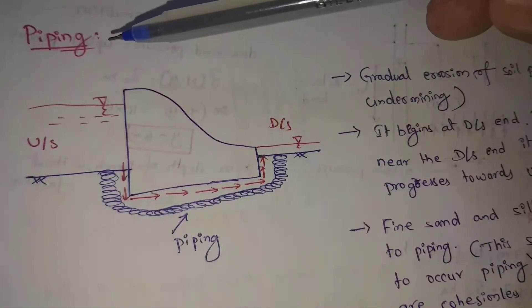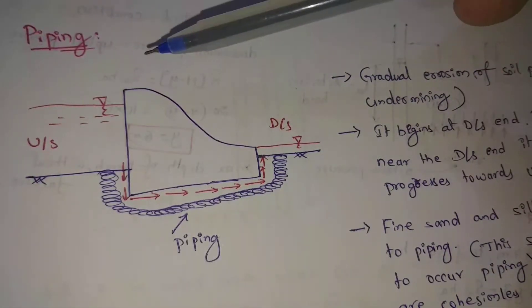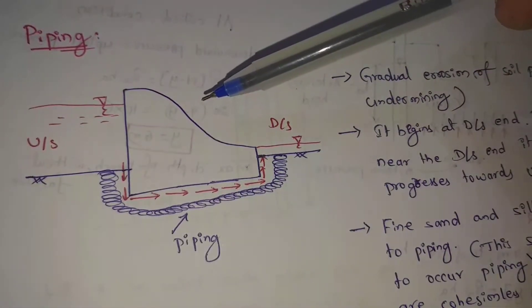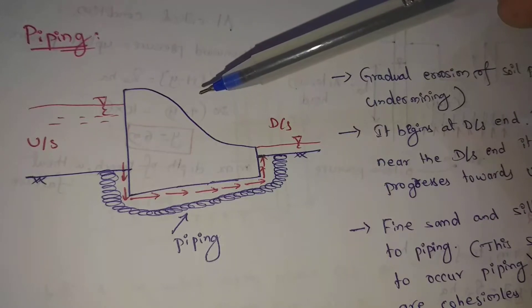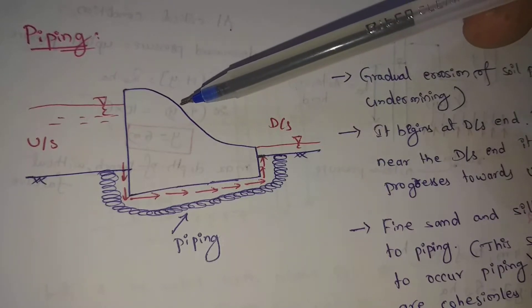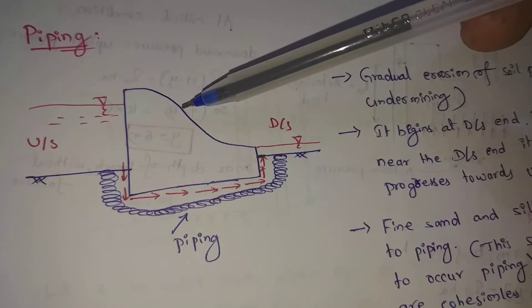Next one: Piping. If we choose major hydraulic structures, piping is one of the major failures. For example, this is a hydraulic structure — a dam.